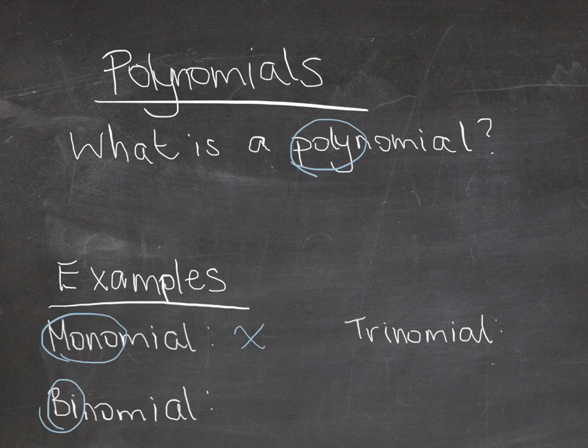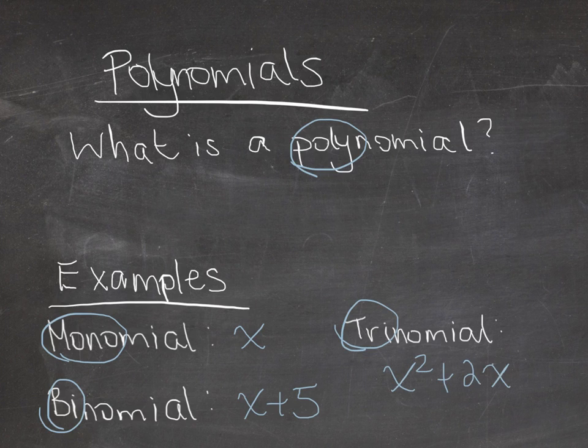A binomial will be something with two terms, so maybe x plus 5. And then a trinomial is a polynomial with three terms, so something like x squared plus 2x plus 1.